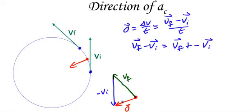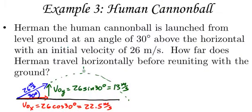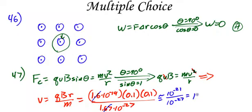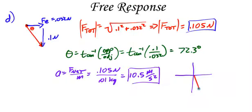Each lesson consists of a presentation of fundamental concepts, which are then illustrated through applications and many fully worked out examples and sample problems. The final lessons consist of a walkthrough of an entire AP Physics exam — 70 multiple-choice questions and 8 free-response questions, all worked out from start to finish.